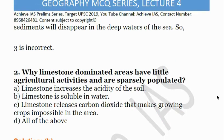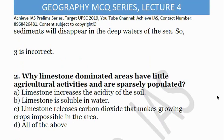The second question is: why do limestone-dominated areas have little agricultural activity and are sparsely populated? The options are: A — limestone increases the acidity of the soil; B — limestone is soluble in water; C — since limestone releases carbon dioxide, growing crops is impossible; D — all of the above. Option A is not correct because limestone doesn't increase acidity — it actually neutralizes excess acidity in the soil. Option B is correct because limestone is soluble in water, making it unsuitable for agriculture. The land beneath these areas gets eroded due to limestone's solubility in water, which is why these areas are sparsely populated. So B is the correct answer.